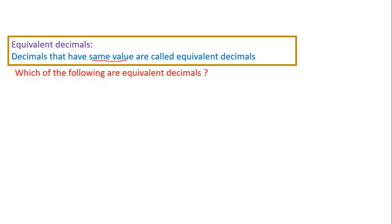Here is a question: which of the following are equivalent decimals — 0.6 and 0.06? To find the equivalent decimals, first convert the given two decimals into fractions. Compare the fractions — if the fractions are equivalent, then the decimals are also equivalent. Because of that, first I will take the first decimal and convert it into a fraction.